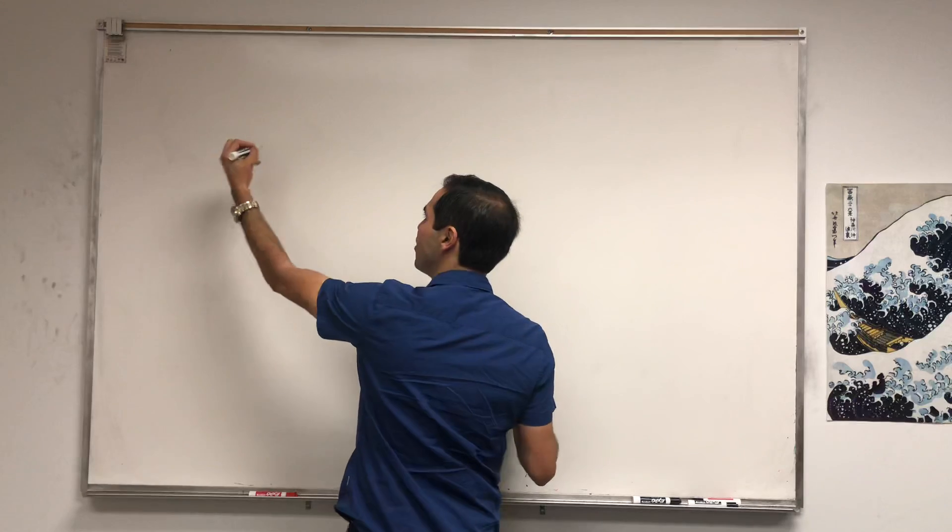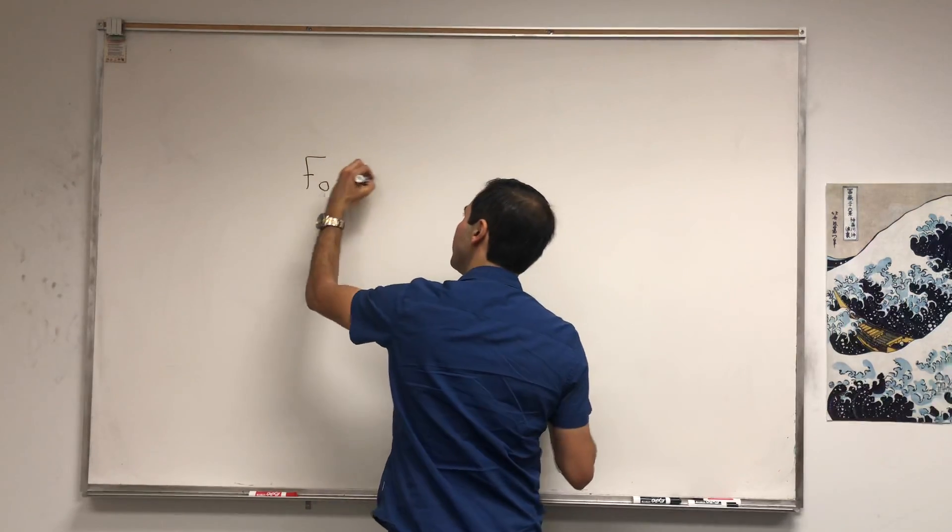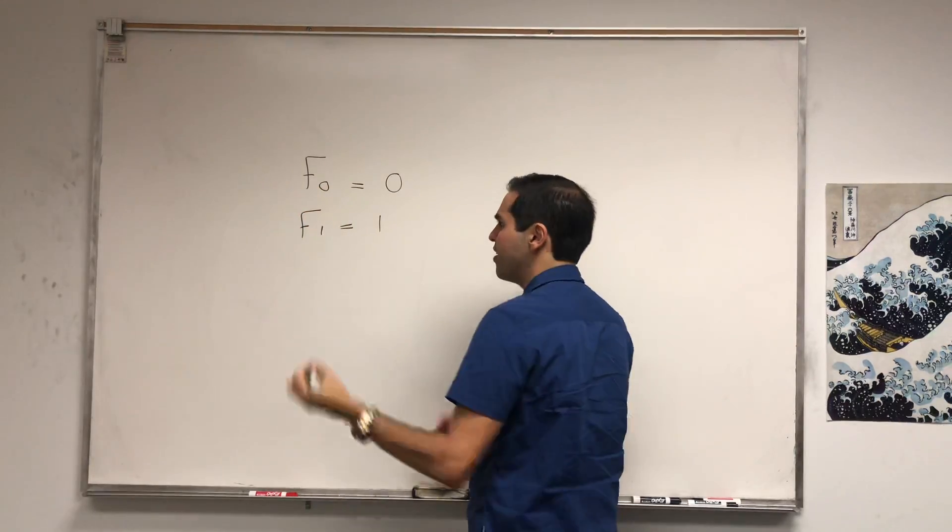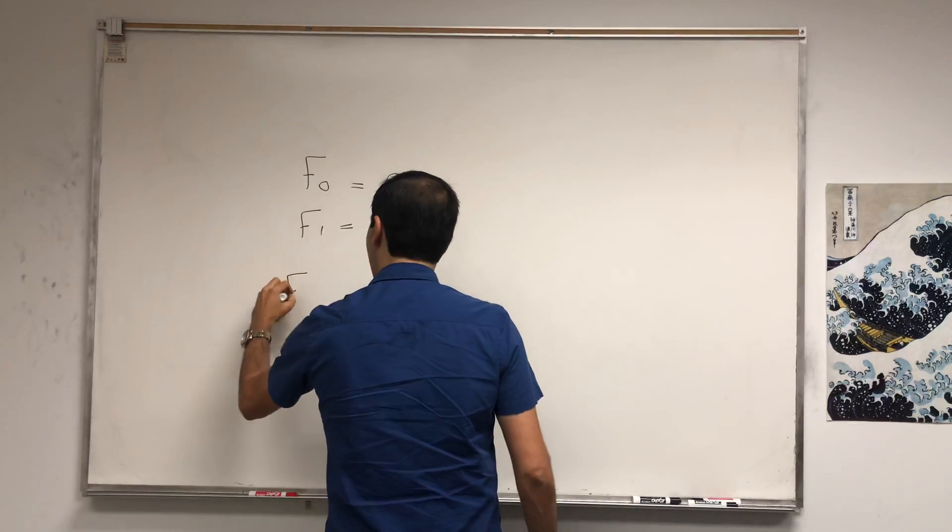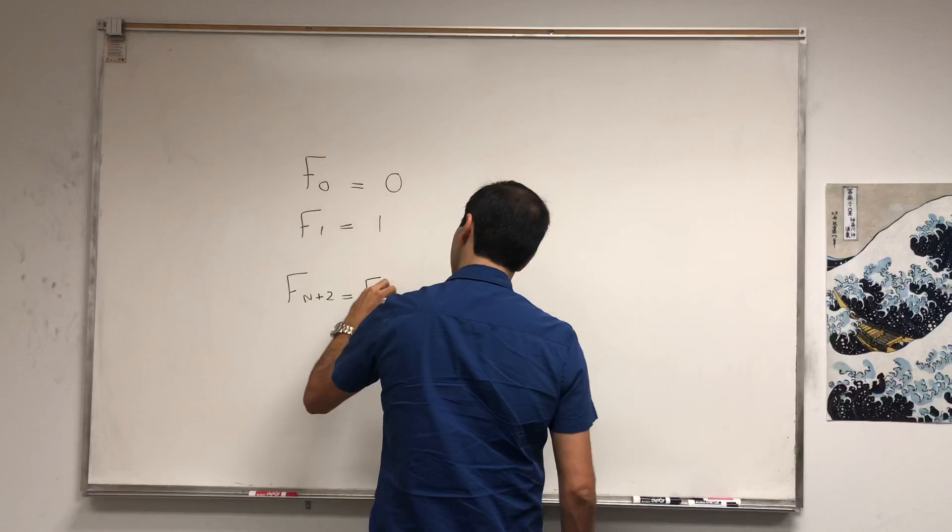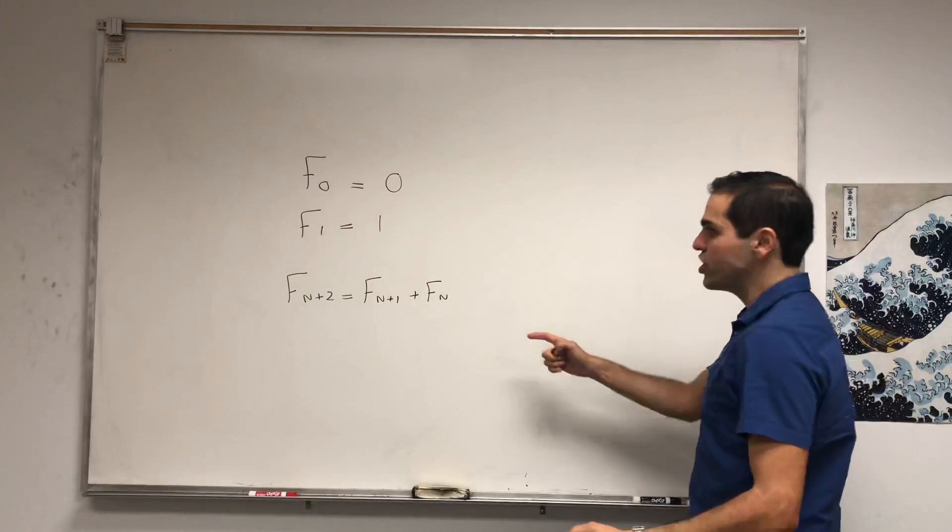Assume we have the following Fibonacci sequence: F0 is 0, F1 is 1, and the Fibonacci numbers are defined recursively by Fn+2 equals Fn+1 plus Fn. The question is, what is the sum of Fibonaccis up to the nth term?